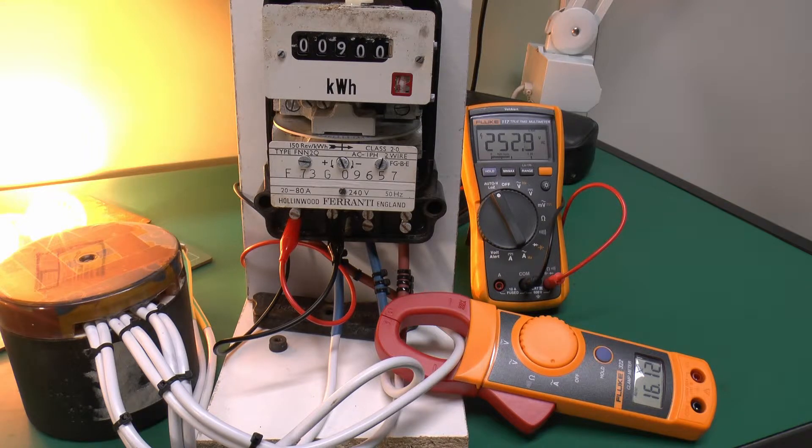The average voltage over the period was 252.9 and the current 16.14 amps. And if you multiply those two together you get 4.08 kilowatts. So virtually identical. So it's highly accurate despite its rusty condition and filth and dirt all over it.